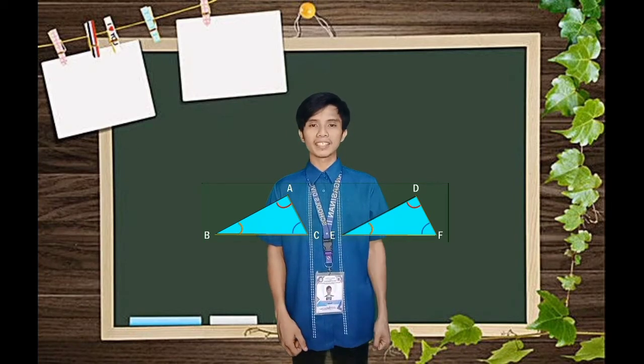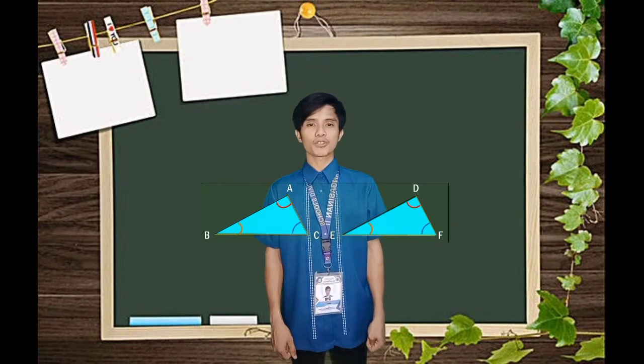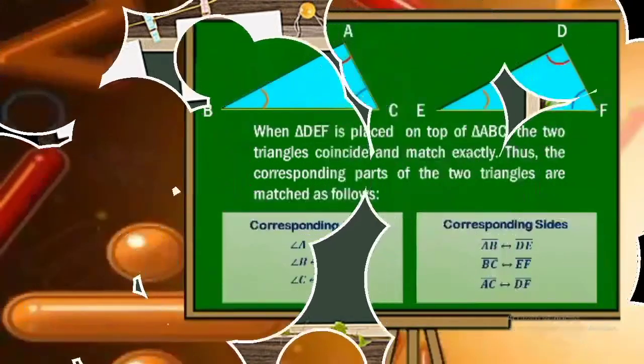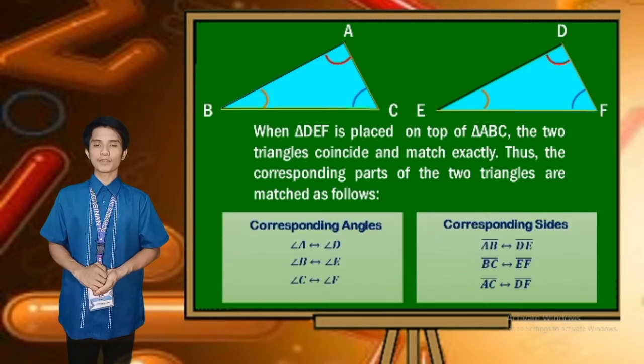When triangle DEF is placed on top of triangle ABC, the triangles should match exactly. Thus, the corresponding parts of the two triangles are matched as follows.